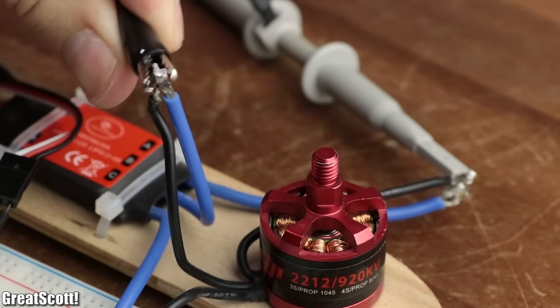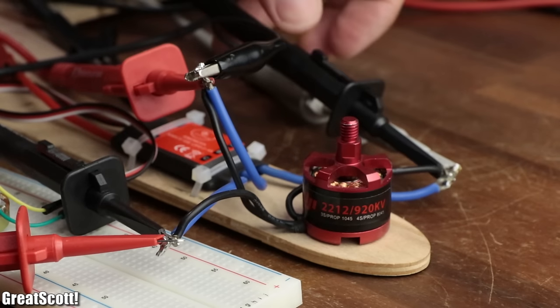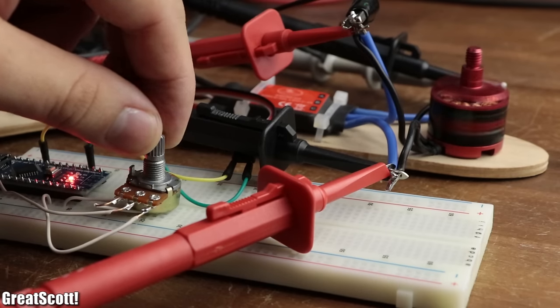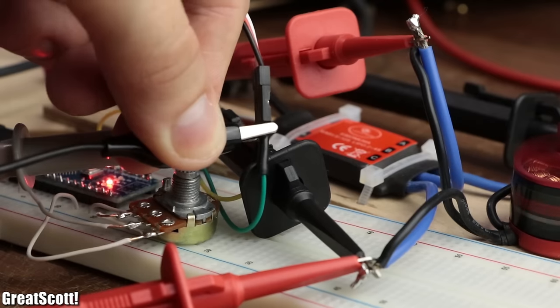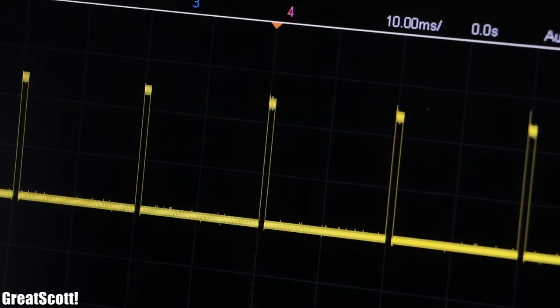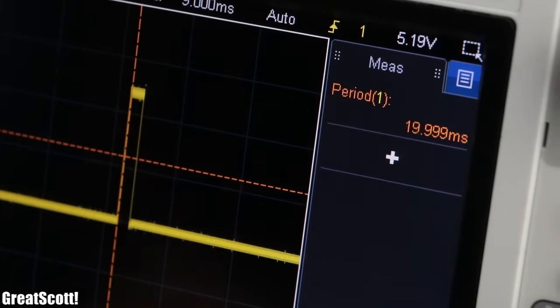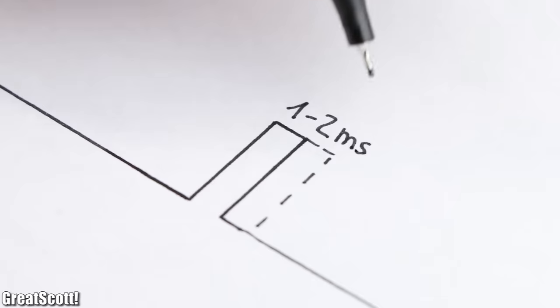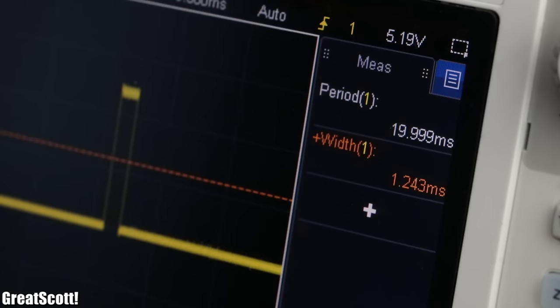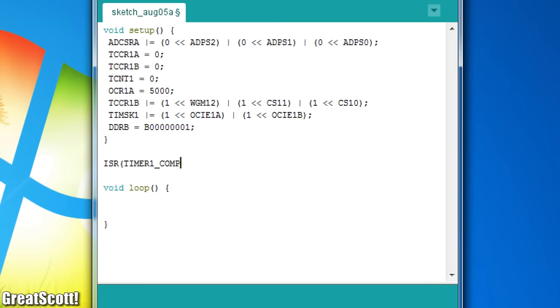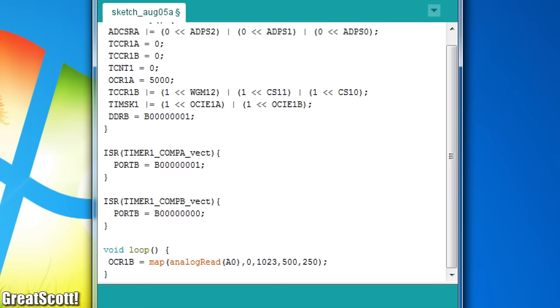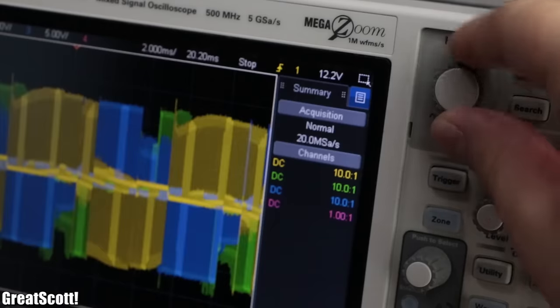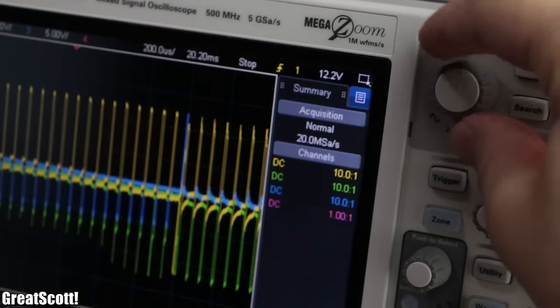First off, I hooked up three oscilloscope probes to the three phases of the motor and sent an input signal to the ESC so that it rotates relatively slow. By the way, the input signal consists of a simple PWM signal with a frequency of 20 milliseconds and an on time of 1 to 2 milliseconds. While 1 millisecond represents the low speeds and 2 milliseconds the high speeds, I created the signal by utilizing the timer 1 of the Arduino microcontroller. But back to topic. The oscilloscope already shows us that this will not be a simple project.